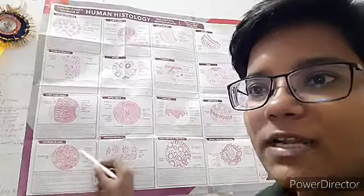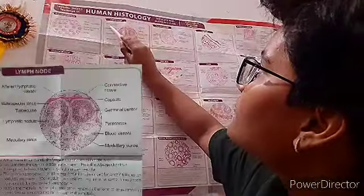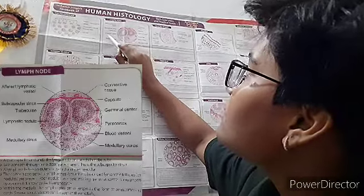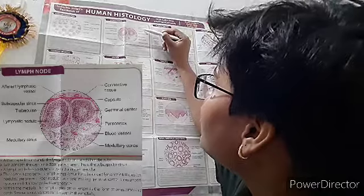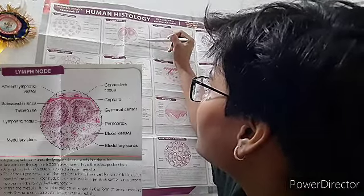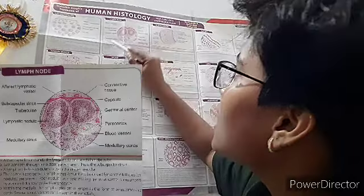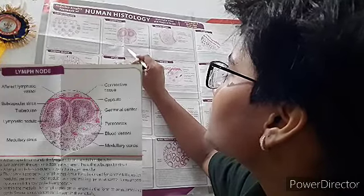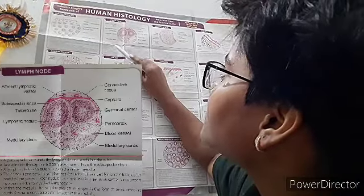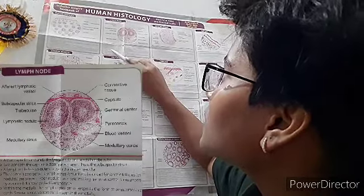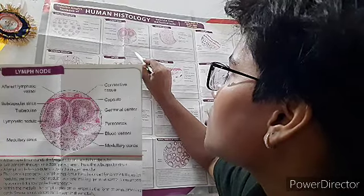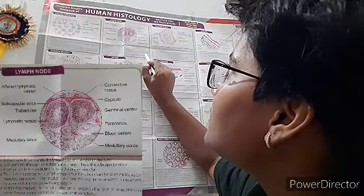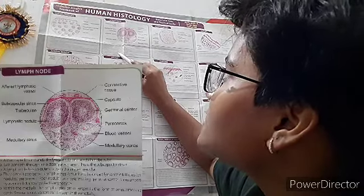Now the lymph node. Visible structures include afferent lymphatic vessels, subscapular sinus, trabeculae, lymphatic nodules, medullary sinus, connective tissue capsule, germinal center, paracortex, blood vessels, and medullary cords. A thin capsule surrounds the lymph node and sends in trabeculae. Just beneath the capsule, a clear space — the subscapular sinus — is seen. The lymph node has an outer cortex packed with lymphocytes, and a number of rounded lymphatic follicles or nodules are present. Each nodule has a pale-staining germinal center surrounded by densely packed lymphocytes.